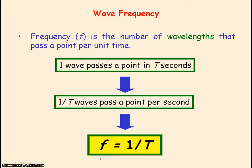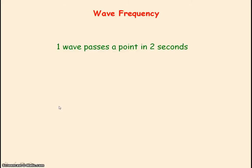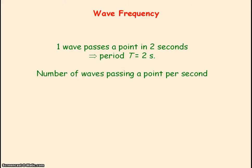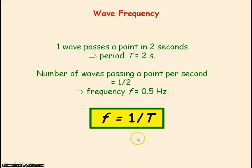It may be easier to understand this relationship using numbers. If one wave passes a point in two seconds, then the period T equals two seconds. How many waves pass a point per second? That will be a half. From the definition of frequency — the number of waves passing a point per unit time — we can say the frequency is 0.5 hertz. We took one divided by our time period: one divided by two seconds gives a frequency of 0.5 hertz.